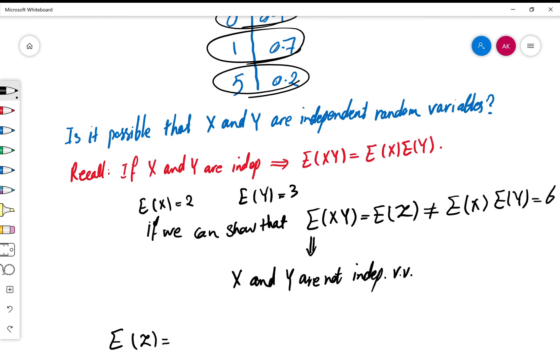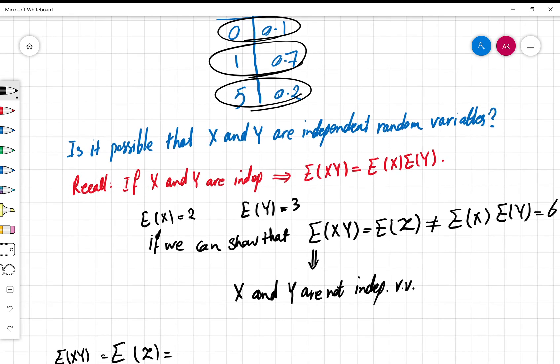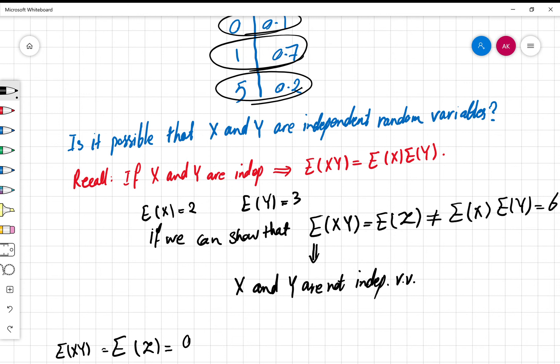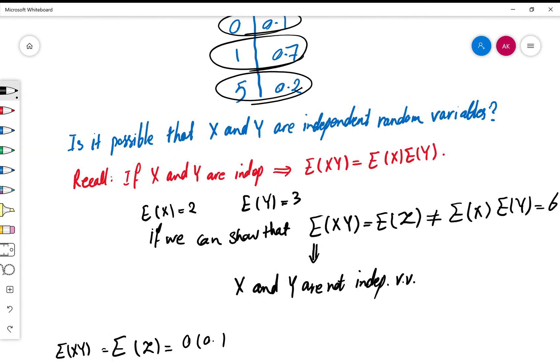So in this case, E(Z)—by the way, you have to remember this is E(XY); Z is just another name for XY—is equal to zero times 0.1 plus one times 0.7 plus five times 0.2. As a result, first one is zero, second one is 0.7, the third one is 1.0.